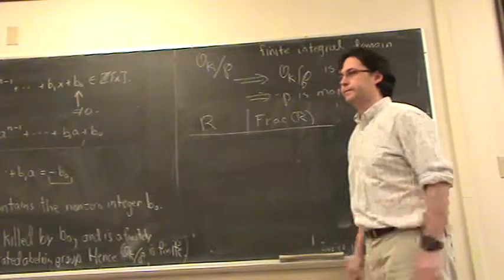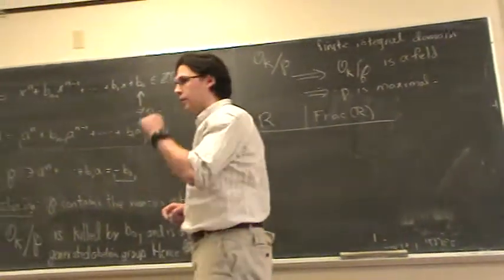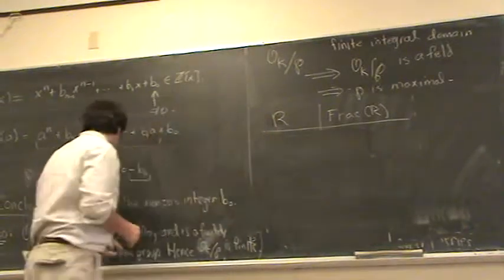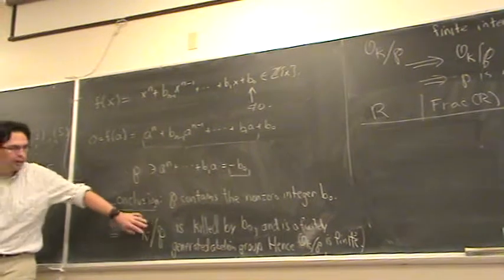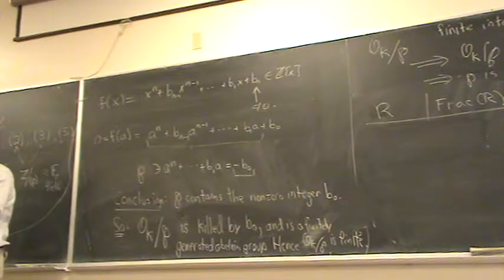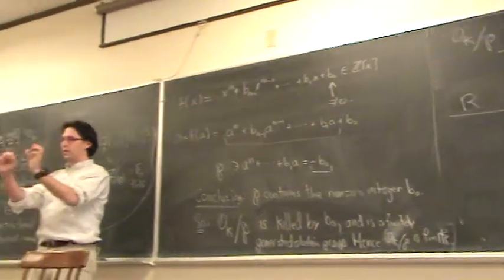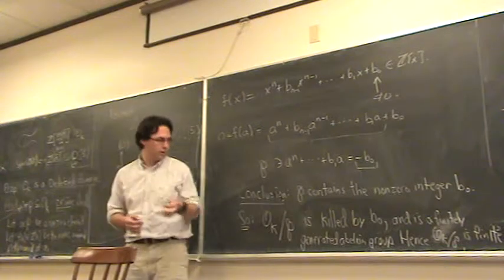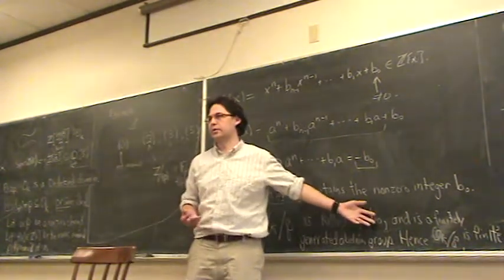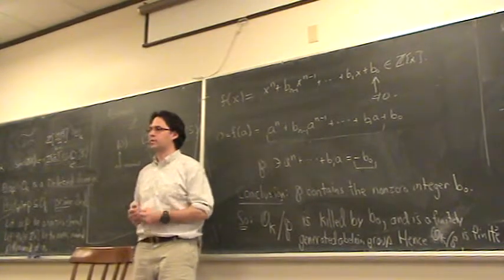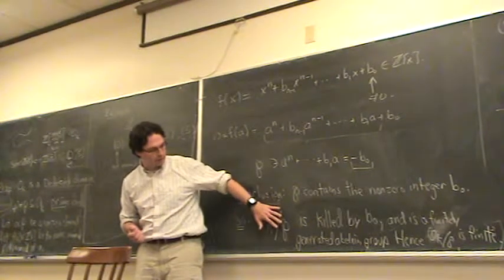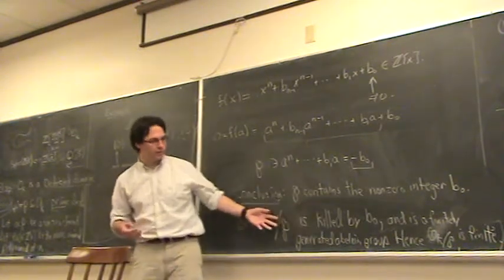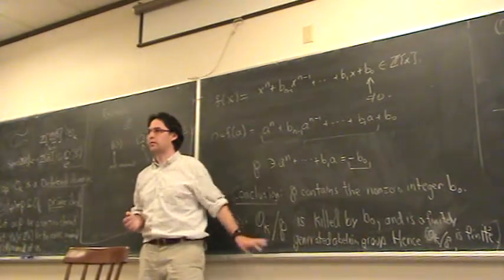Question: this is killed by b_0, but if b_0 is in p, doesn't that just mean we've multiplied by zero? All I mean is: imagine O_K mod p as some abstract abelian group. If you take any element c and multiply it by b_0, you get something that's in p, so something that's zero in the quotient. That means any element of this abelian group added to itself b_0 times gives zero. So by the structure theorem, this is a product of copies of z mod n — you can't have any torsion-free copies of z, because they're not killed by b_0.